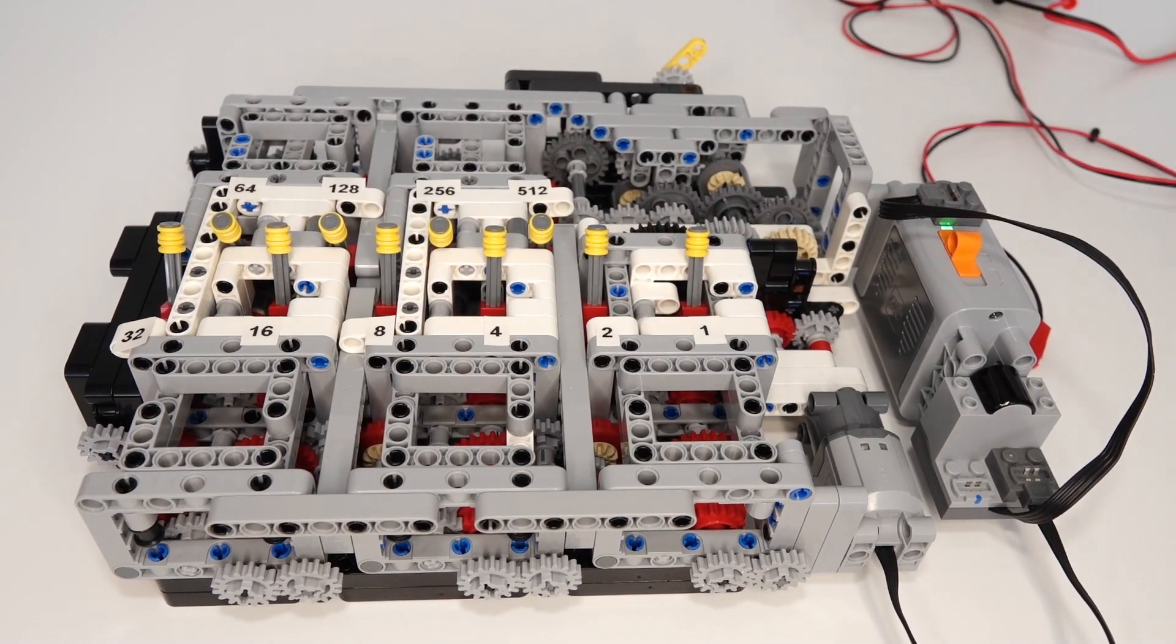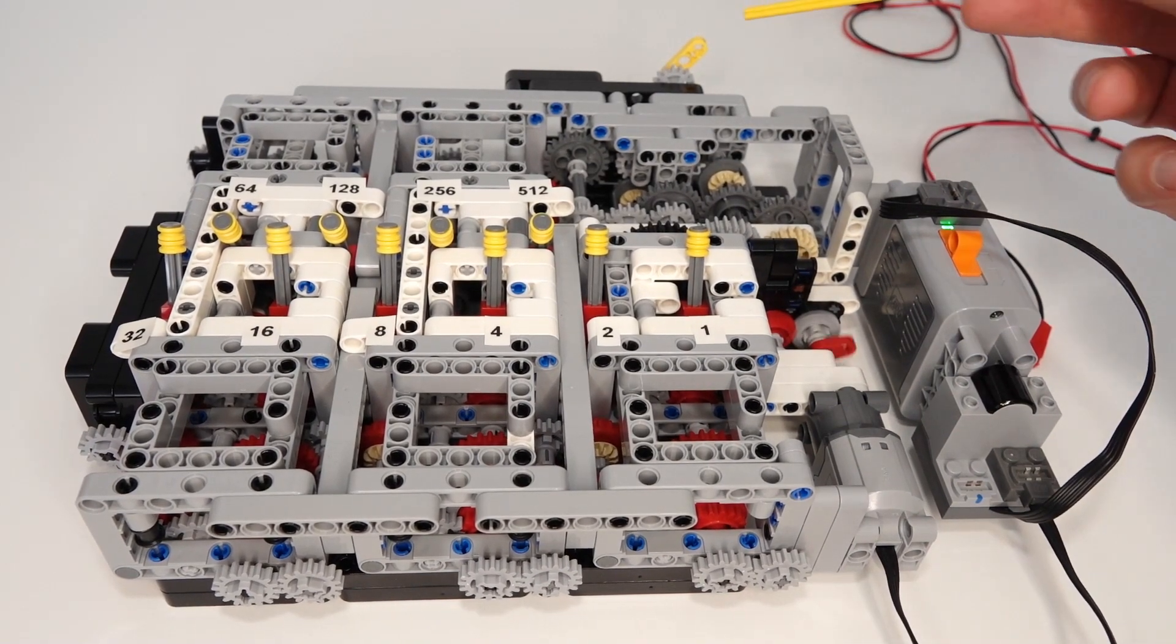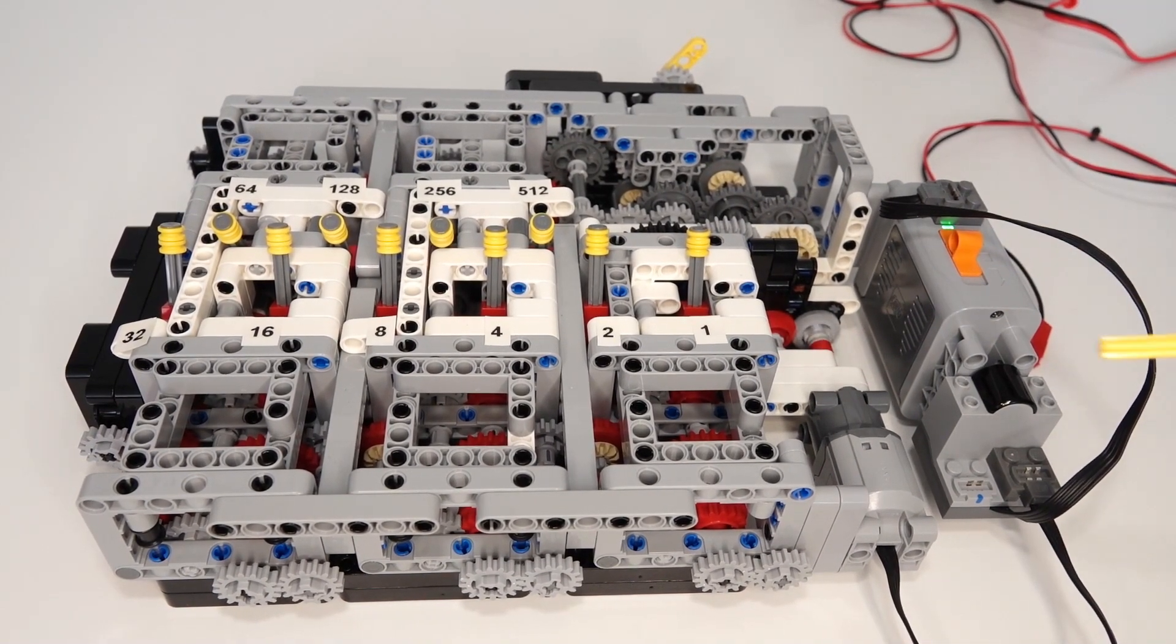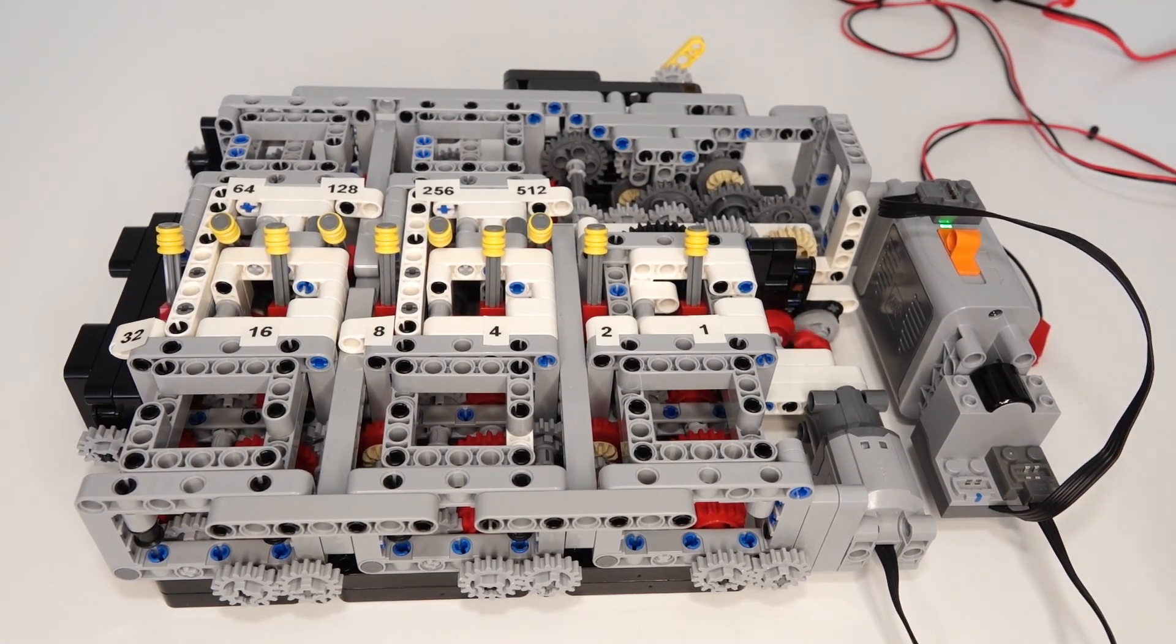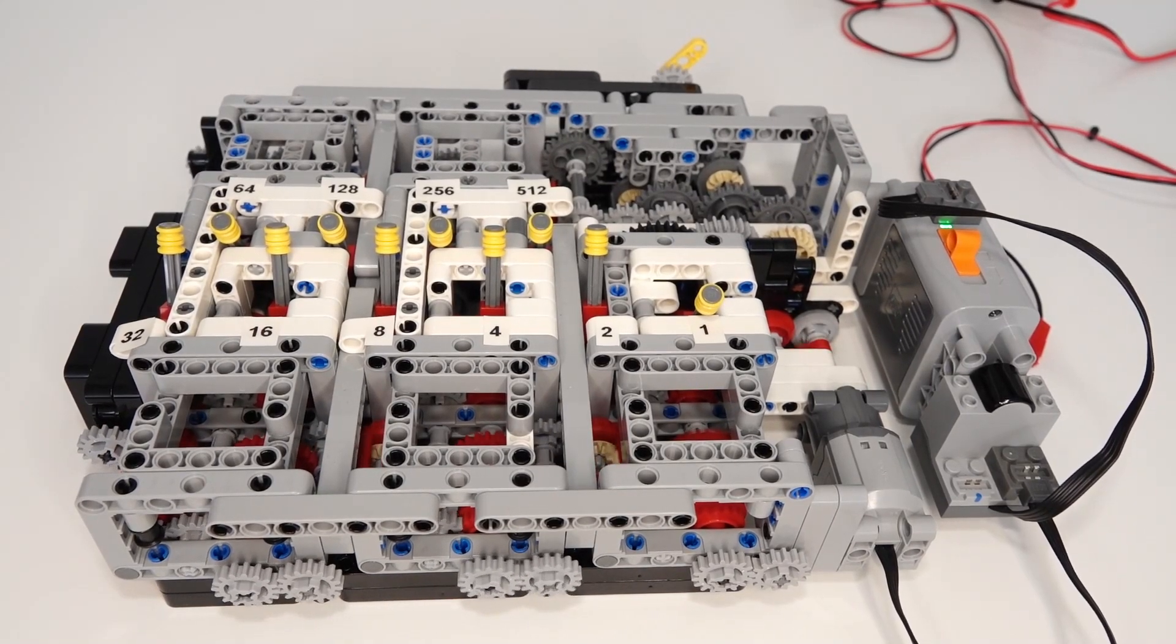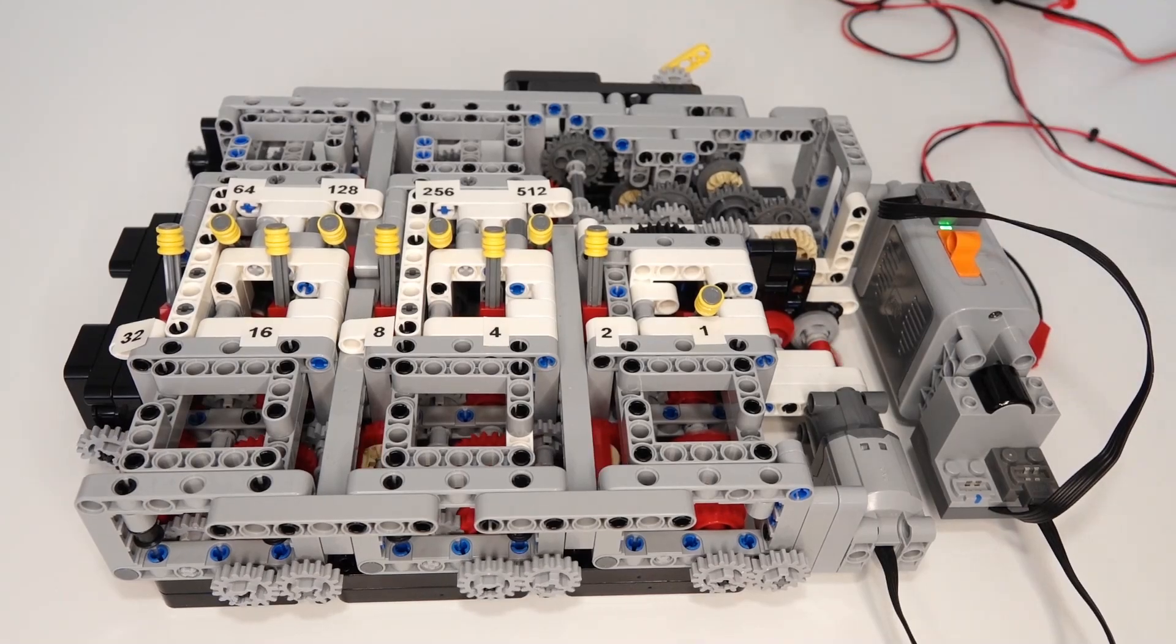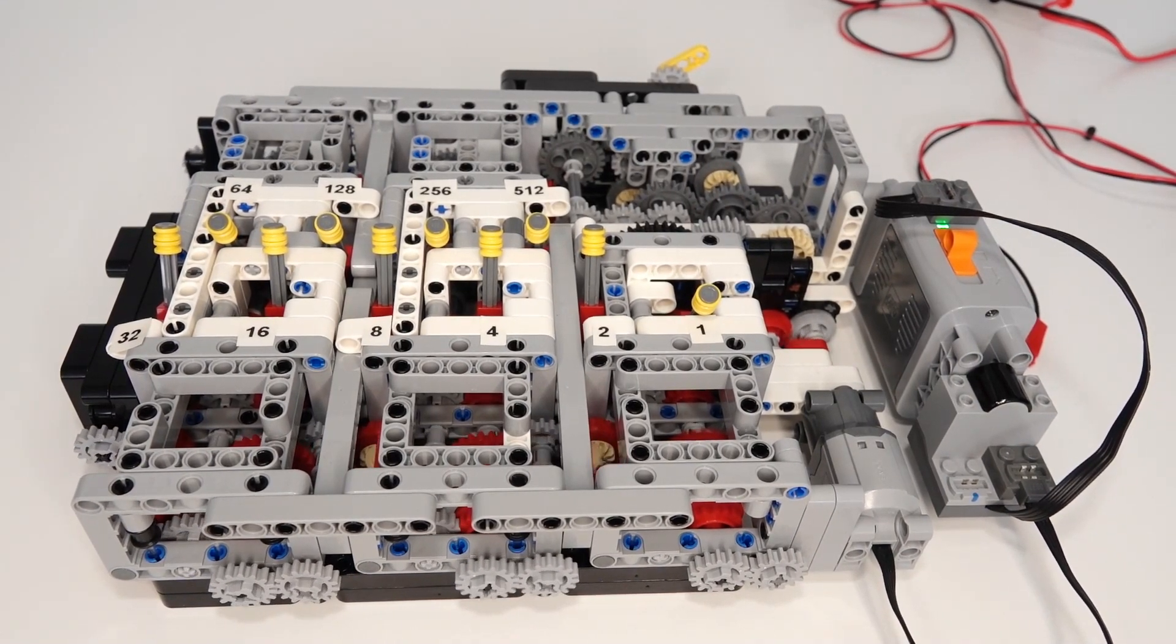I'll give a demonstration. At the moment, all the switches are in neutral. So when I turn on the motor, the output doesn't move because the connection between input and output is disconnected. If I switch number 1 on, it's going to get a gearing ratio of 1 to 1000. So we can see the output moving very slowly.